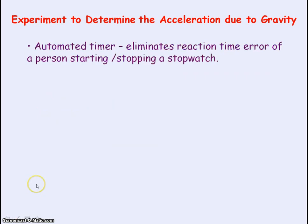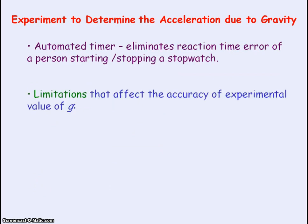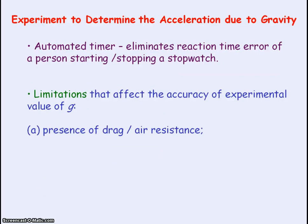The light gate connected to a timer eliminates any reaction time error that a person would have when taking the measurement using a stopwatch. However, there are limitations that affect the accuracy of the value of g. Again, this is due to the presence of drag or air resistance acting on the card, which reduces the value of the acceleration of free fall obtained.